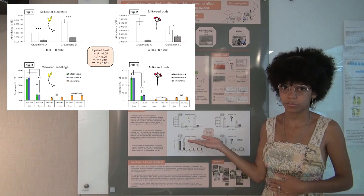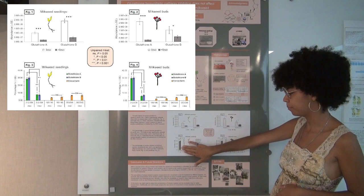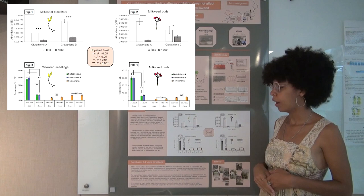The same is true for isotope-labeled glutathione in both seedlings and buds, so that's all good. You can see it in these figures here - figures one, two, three, and four.